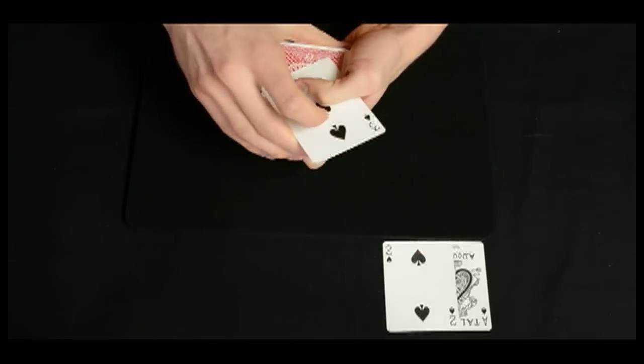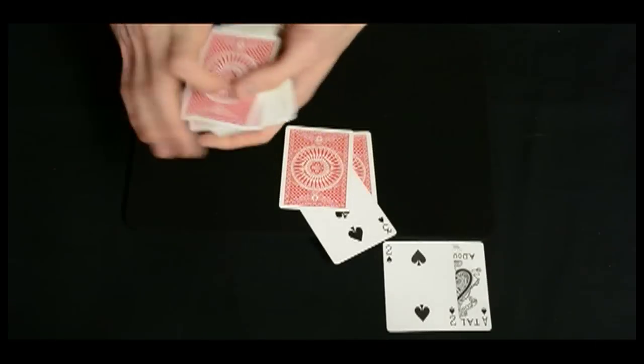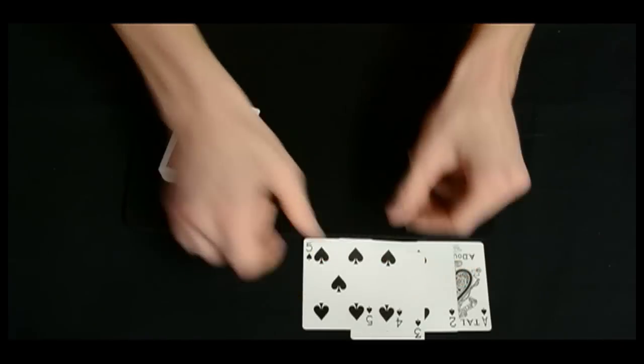Just keep your eye on the three for a second, because it'll actually melt right down into the deck, just like that. Right between, that's right, right between the four and the five of spades.